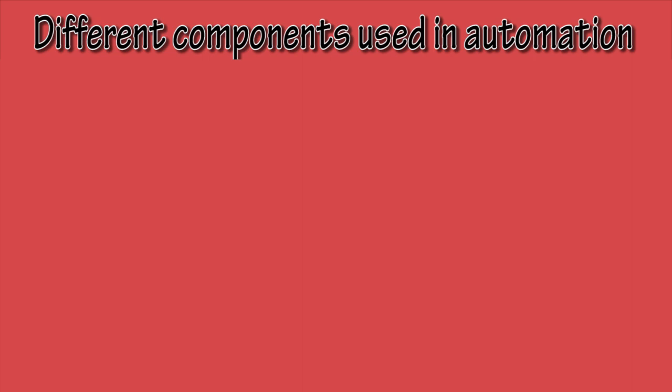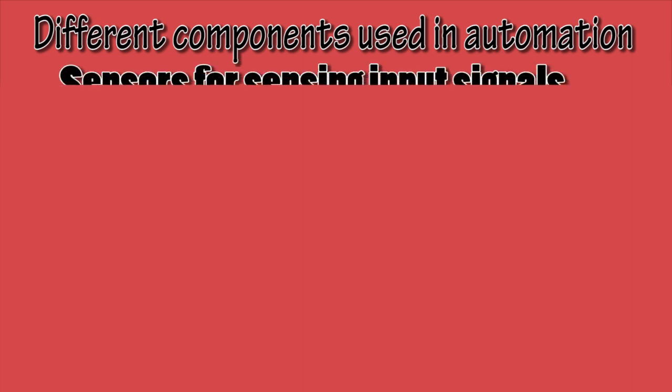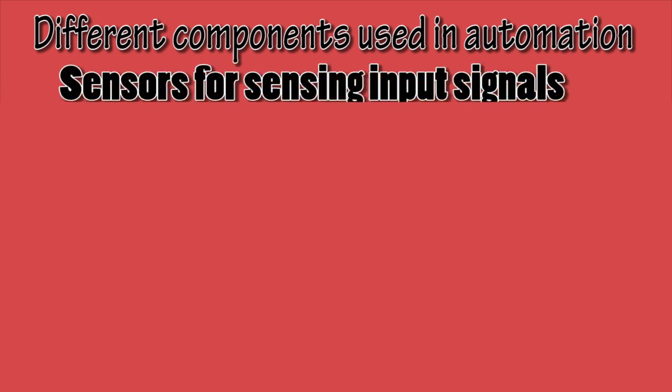Let us see the different components used in automation. Sensors are used for sensing various inputs. Proximity sensor, photoelectric sensor, temperature sensor, pressure sensor, light sensor, and gas sensors are a few examples of sensors used as input signals.